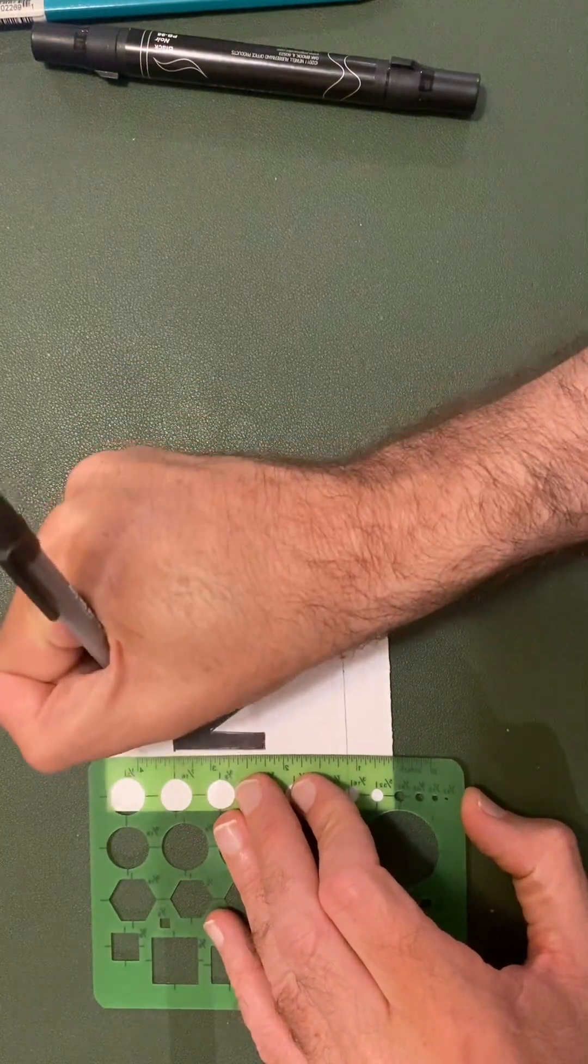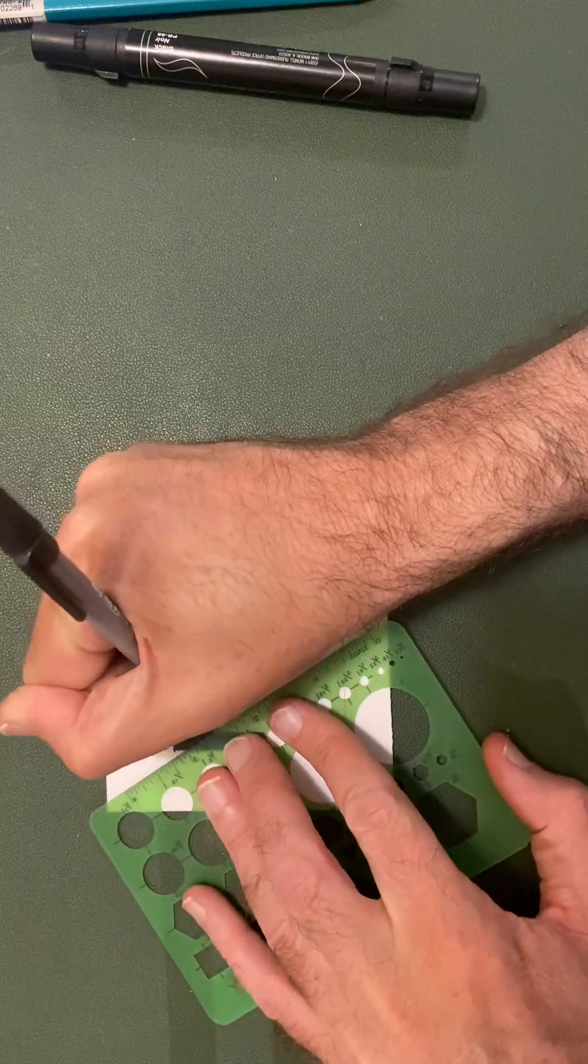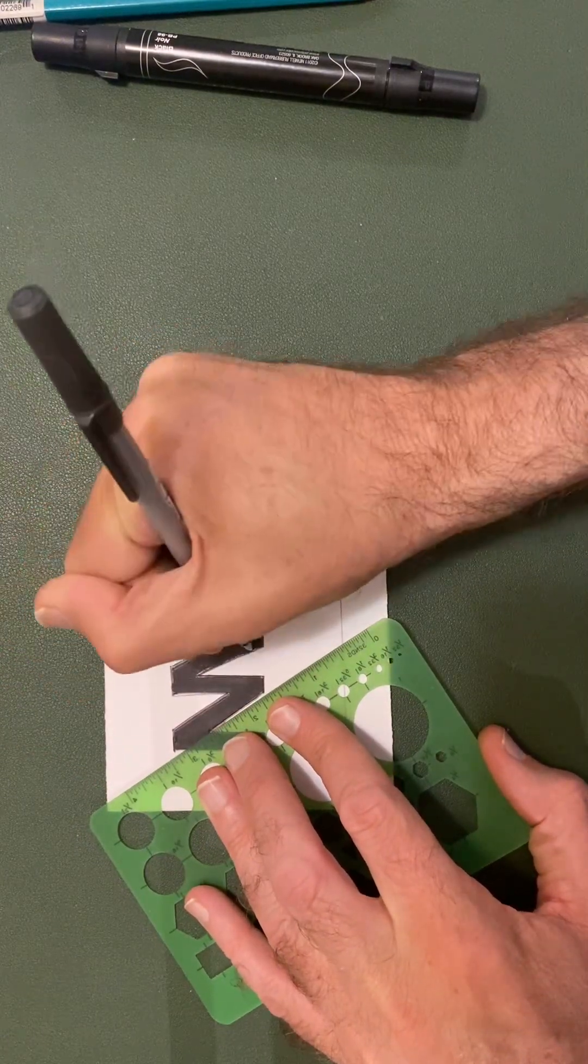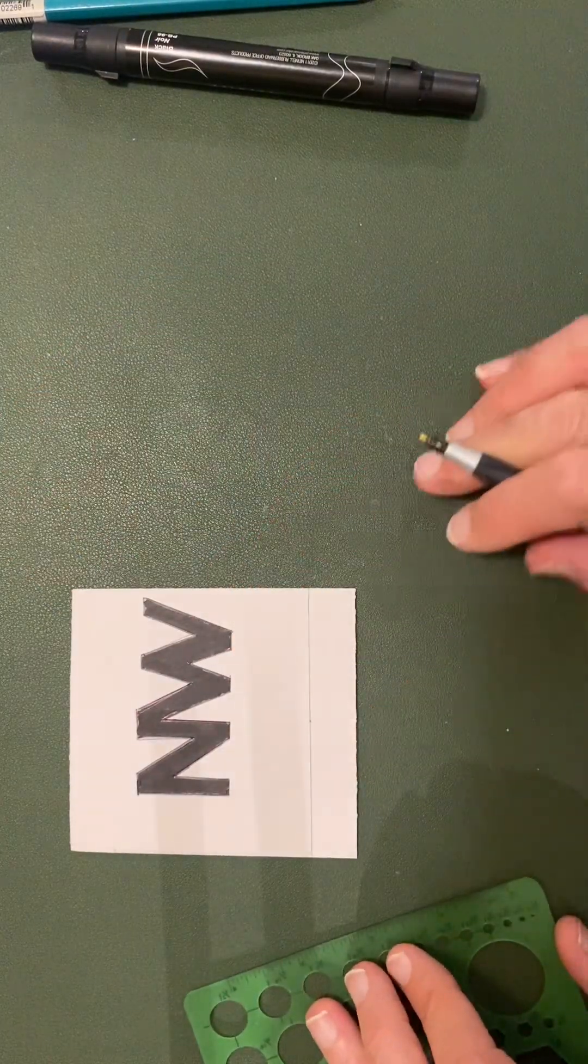And see, practicing all this touching up, this is stuff you do on your final drawings too, is get your eye for where things need touching up. And there we have a basic Norfolk and Western logo.